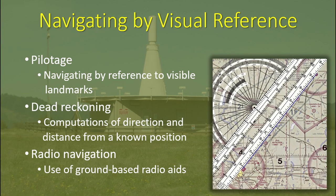Air navigation is the process of piloting an aircraft from one geographic position to another while monitoring one's position as the flight progresses. Visual air navigation involves plotting the course on an aeronautical chart, selecting checkpoints, measuring distances, obtaining pertinent weather information, and computing flight time, headings, and fuel requirements. Methods used in visual navigation include pilotage, dead reckoning, and radio navigation.